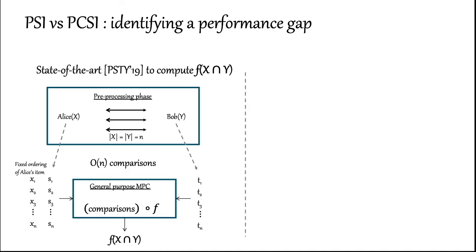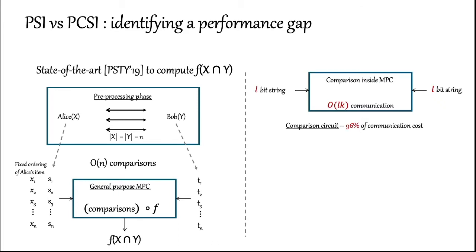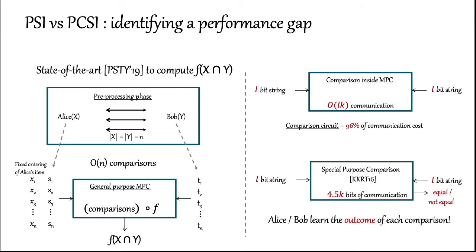Now let's take a closer look at the communication cost of comparing strings. Comparing two L bit strings is a boolean circuit with order L non-free gates and needs order L times kappa communication where kappa is the security parameter. Concretely, the circuit for the order n comparisons accounts for 96% of the communication cost in the PSTY protocol. In contrast, the state-of-the-art PSI protocols use a special purpose comparison protocol. To compare two L bit strings, it requires just 4.5 times kappa bits of communication. Notice that the communication is independent of the length of the strings. The caveat is that these equality tests reveal the output of comparison to one of the parties.